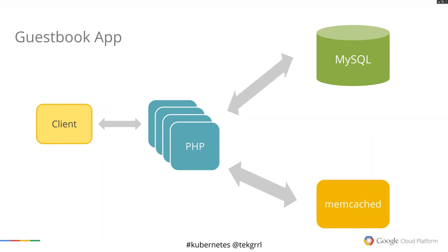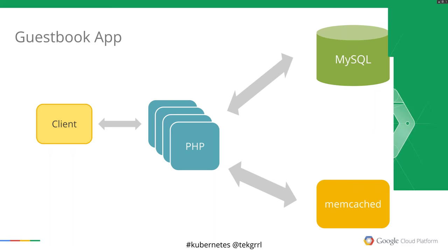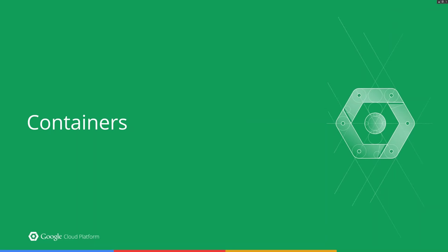Let's get away from what Google does internally and look at how we're trying to empower you to do this yourself — to have the same kind of mechanisms for scaling and managing complicated applications using a scheduler. We're going to use a sample application: a simple guestbook application. We have a client talking to multiple PHP frontends, and the PHP frontends communicate with MySQL at the back end and memcache. Before we get into Kubernetes, we need a brief overview of containers for context.